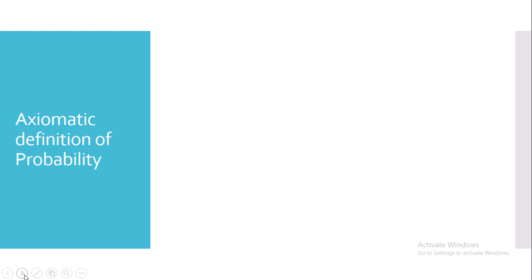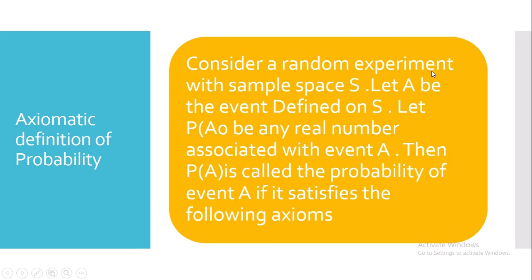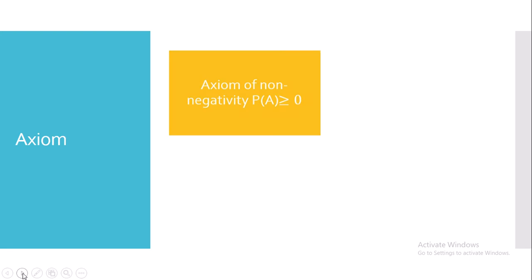Now let's move on to the axiomatic definition of probability. Here we consider a random experiment with the sample space S. Let A be an event defined on S, and let probability of A be any real number associated with event A. Then probability of A is called the probability of event A if it satisfies the following axioms. There are three axioms to be studied.